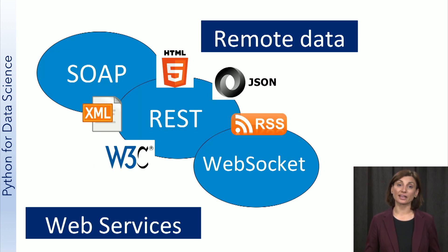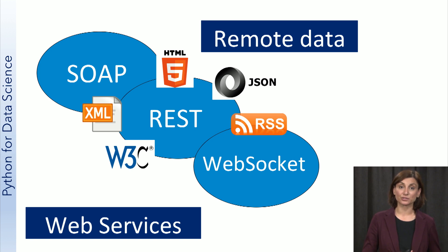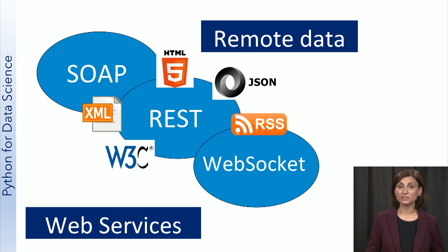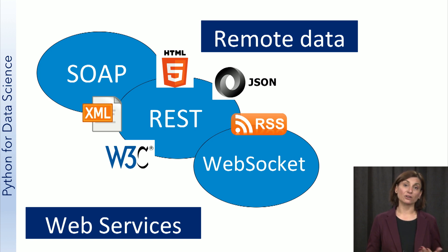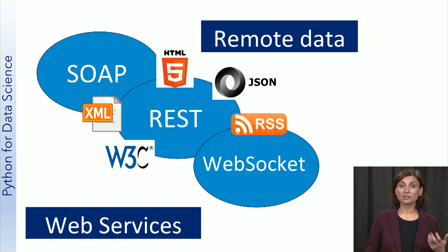An increasingly popular way to get data is from websites. Web pages are written using a set of standards approved by the World Wide Web Consortium, or W3C. This includes a variety of formats and services. One common format is XML, or Extensible Markup Language, or JSON, which both use markup symbols and tags to describe the contents on a web page. Many websites also host web services which provide programmatic access to their data. There are several types of web services, the most popular one being REST, since it's easy to use.